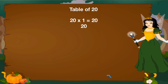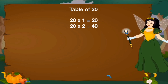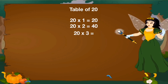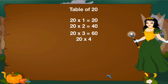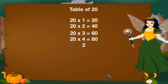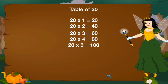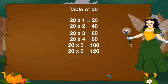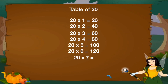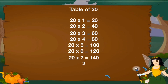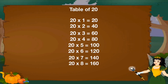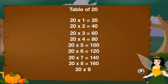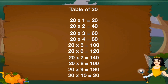Let's revise table of 20. 20 1's are 20, 20 2's are 40, 20 3's are 60, 20 4's are 80, 20 5's are 100, 20 6's are 120, 20 7's are 140, 20 8's are 160, 20 9's are 180, 20 10's are 200.